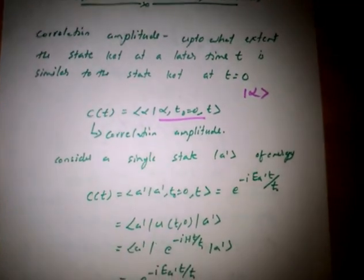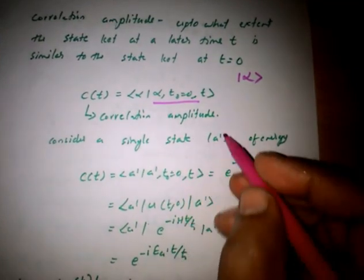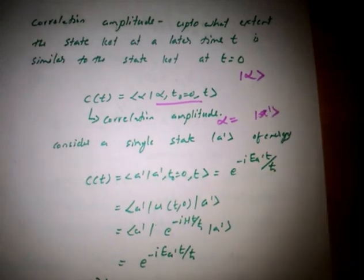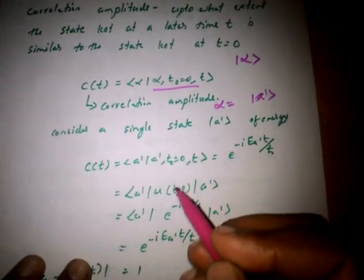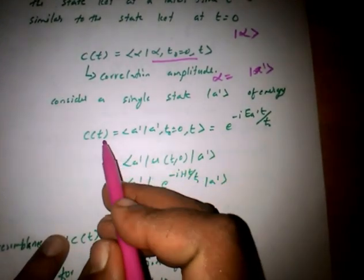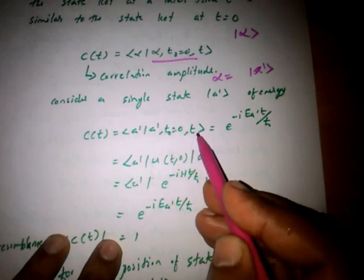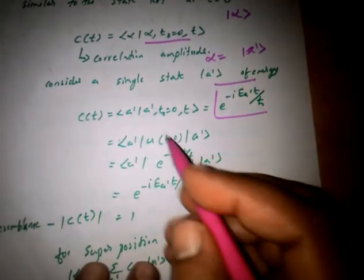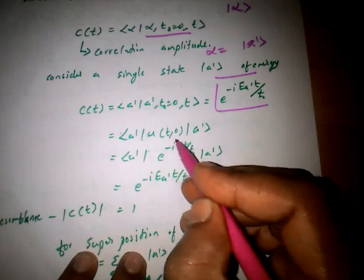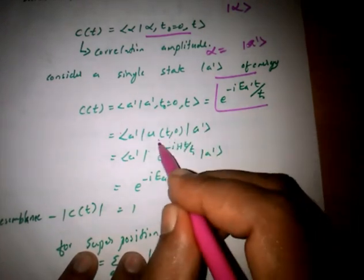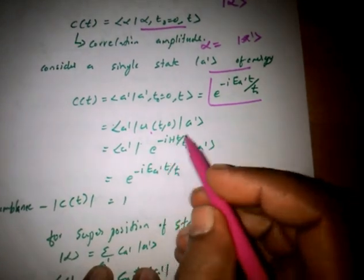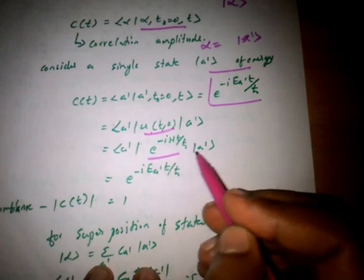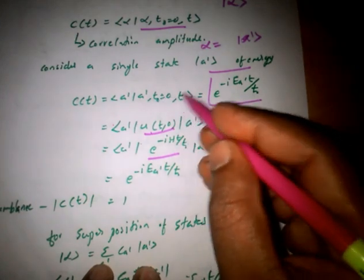As usual, we are taking a single state — that is an energy eigenstate |a'⟩. We write the correlation amplitude as C(t) = ⟨a'| U(t, 0) |a'⟩, where U(t, 0) is the time evolution operator. The form of the time evolution operator is e^(−iHt/ℏ), operating on |a'⟩ to give |a', t⟩.